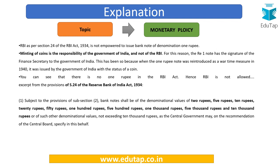Section 24 of the RBI Act does not empower the RBI to issue bank notes of denomination of rupee 1, because minting of coins is the responsibility of the Government of India and not the RBI. In 1940, as a wartime measure, the then Government of India introduced the rupee 1 note and it was given the status of a coin. That is why it carries the signature of the Finance Secretary to the Government of India and not the RBI Governor like other notes.